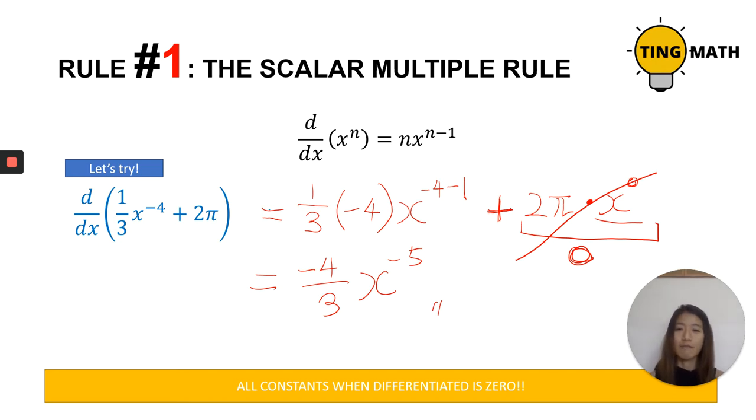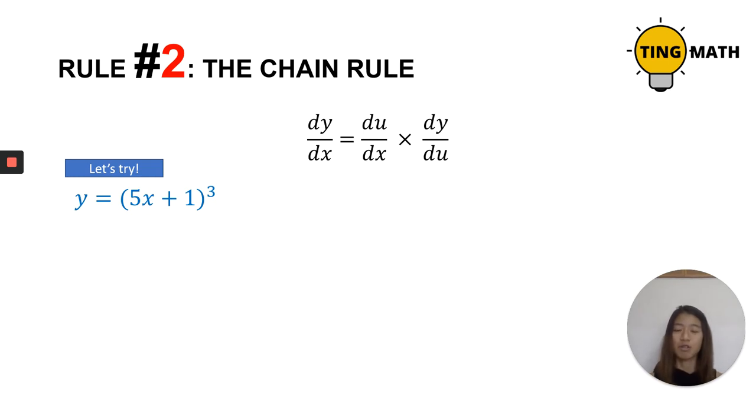Now that we have mastered the scalar multiple rule, let's move on to the chain rule. Our rule number two states that dy over dx equals du over dx multiplied by dy over du. This is true because if we refresh our memories from multiplying fractions, we just simplify the top and the bottom and get dy over dx. So how do we apply the chain rule to differentiation?